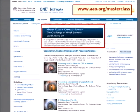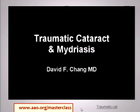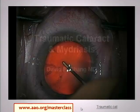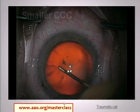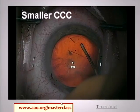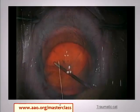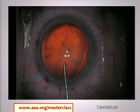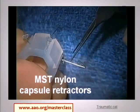Pseudoexfoliation and trauma are the two big sections. This next case is traumatic zonular, traumatic mydriasis, and a cataract. The capsulorexis is your capsule stress test. The first thing we see here is that the bag is very mobile, and I tend to err a little bit on the small side because these are cases where you're more at risk for losing the tear peripherally.